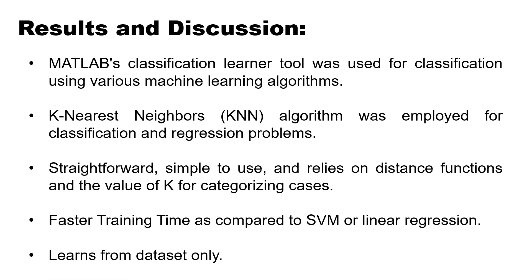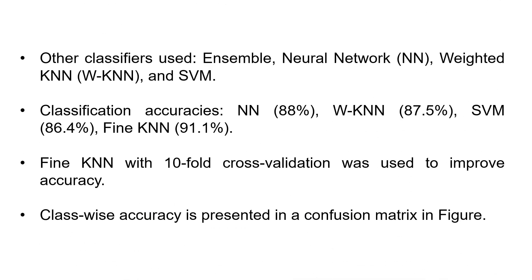For results and discussion, we used MATLAB's Classification Learner tool with various machine learning algorithms. The KNN algorithm was applied for classification — it is straightforward, simple to use, and relies on a distance function and the value of k for categorizing cases, with faster training time compared to support vector machine or linear regression. It learns from the dataset only and does not involve complex parameter tuning. For comparison, we used Ensemble, Neural Network, weighted KNN, and support vector machine, with accuracies of 88%, 87.5%, and 86.4% respectively. Using Fine KNN with 10-fold cross-validation improved accuracy to 91.1%. Fine KNN uses a k-value of 1.